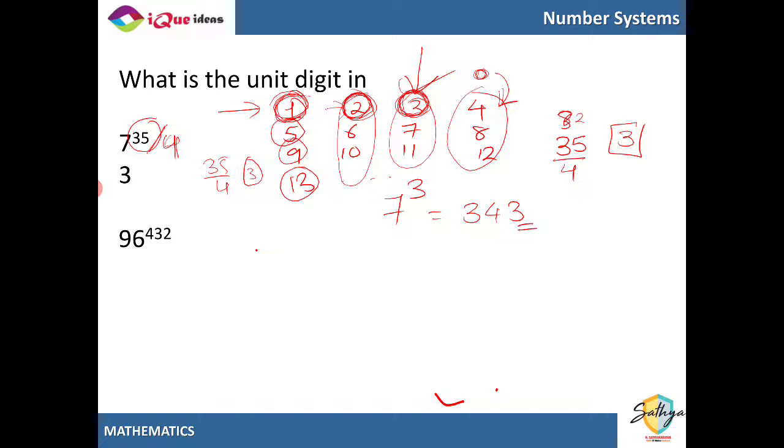So what is 96 raised to 432? So we are only concerned with the units place. So we will take this as 6 raised to 432. And 6 raised to any power always ends in 6. So irrespective of what the power is, as the base has unit digit as 6, so the answer is always 6.